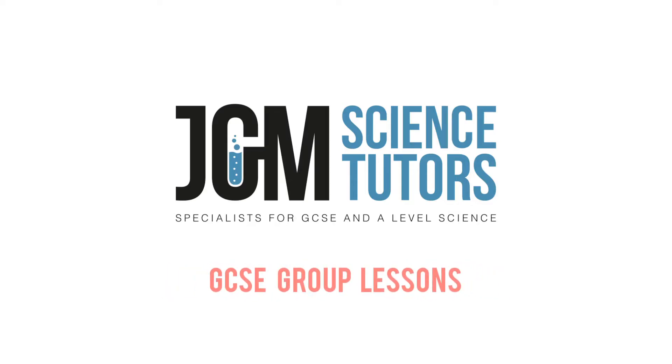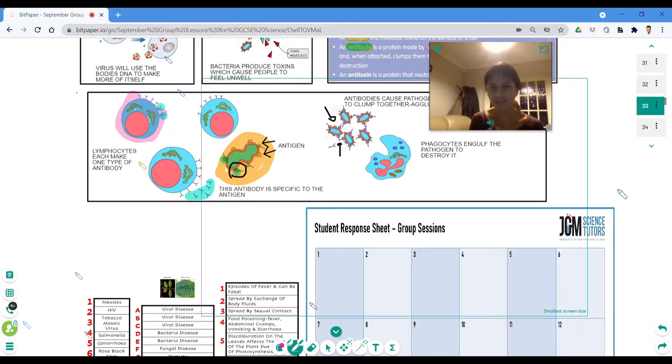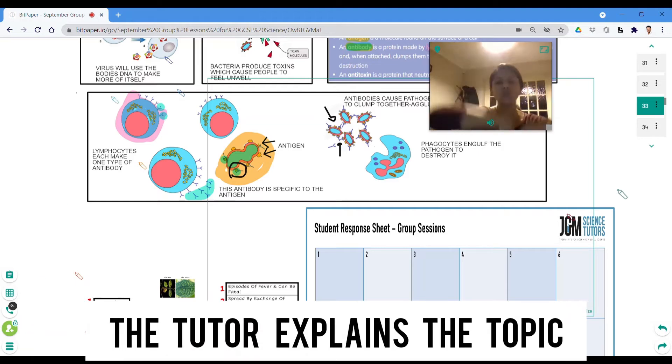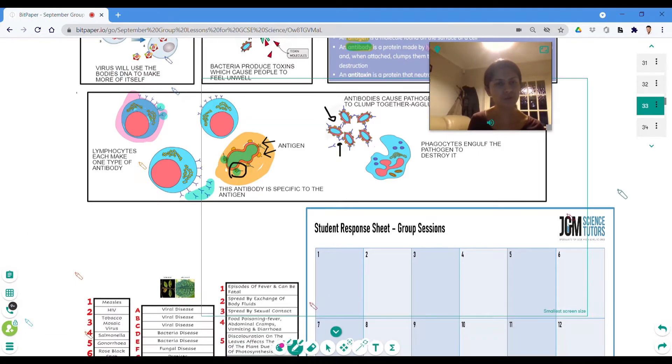GCSE group lessons with JGM science tutors. In group sessions a tutor will explain the topic to a group of 18 students. They will go through in detail exactly how something works before allowing the students an opportunity to try and answer on their own.